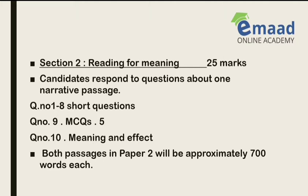Section 2 in Paper 2 is Reading for Meaning, which also carries 25 marks. In this section, candidates respond to questions about one narrative passage — like a story or narration. There are multiple types of questions from that narrative passage. For example, in the 2019 Cambridge O Levels paper, questions 1 to 8 included short-answer questions — information-based questions from which you have to give short answers in the space provided in your paper.